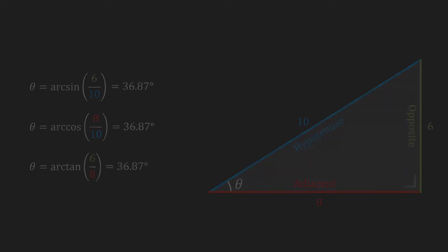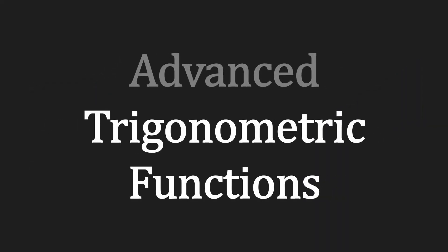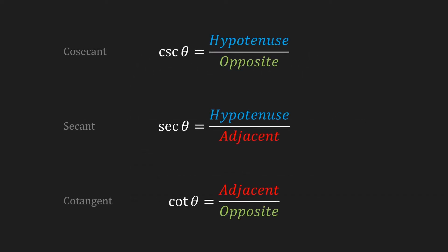There are even more trigonometric functions, and I like to think of them as advanced trigonometric functions, however they're not really that special. I'm talking about the cosecant, the secant, and the cotangent. You might notice that these are very similar to the sine, cosine, and tangent. In fact, all that's different is that the numerator and denominator of these fractions have swapped places. That is why the cosecant is equal to 1 over the sine, the secant is equal to 1 over the cosine, and the cotangent is equal to 1 over the tangent.